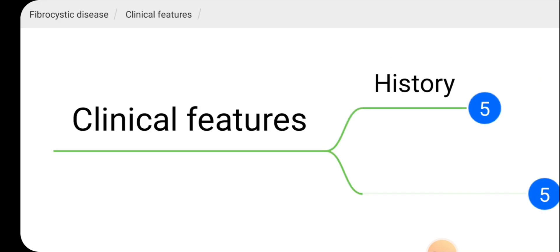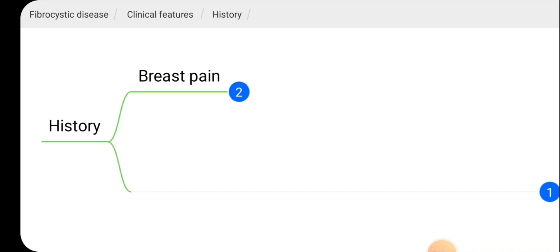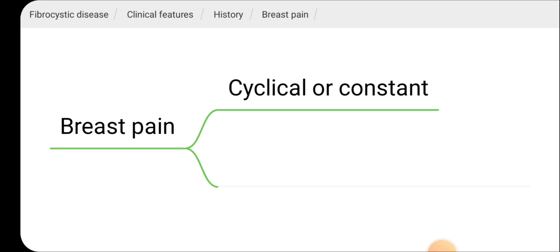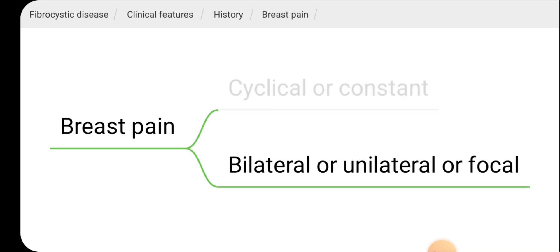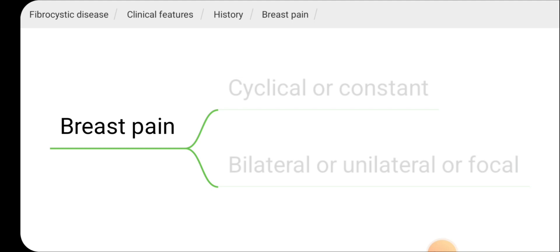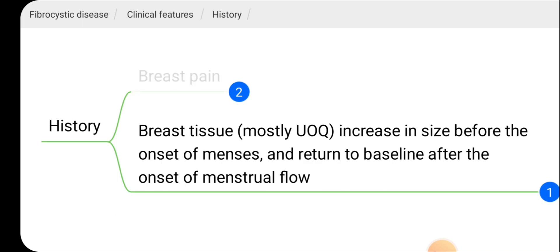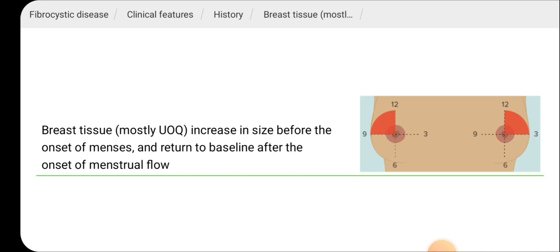Looking at the clinical features — history and examination findings — the patient will present with breast pain. This pain is either cyclical or constant, and can occur bilaterally, unilaterally, or as focal pain. Breast tissues increase in size before the onset of menses and return to baseline after the onset of the menstrual period in patients with fibrocystic disease.